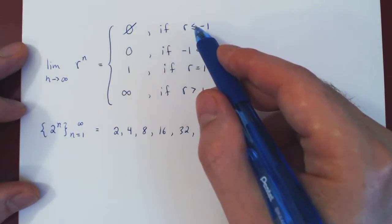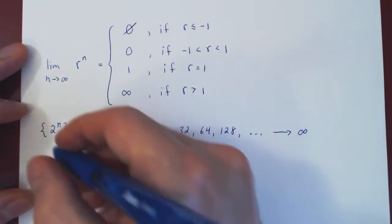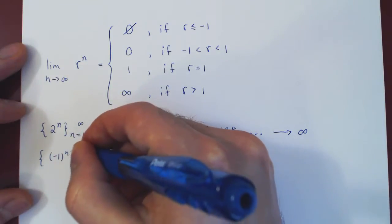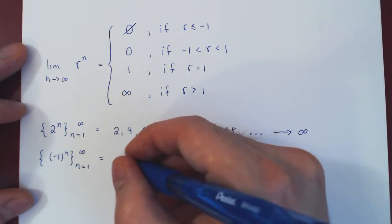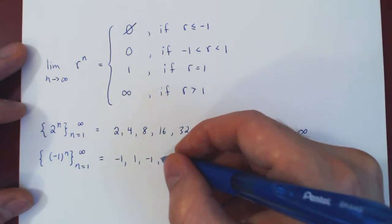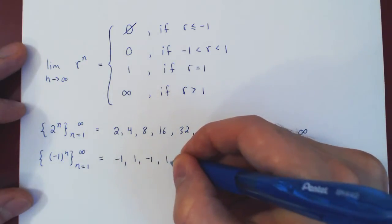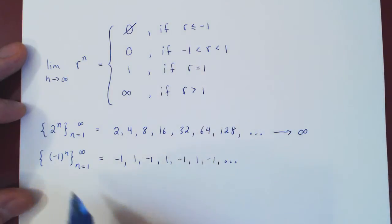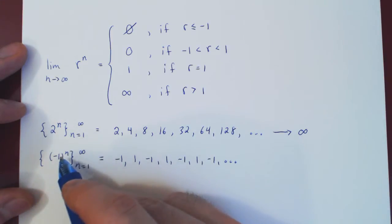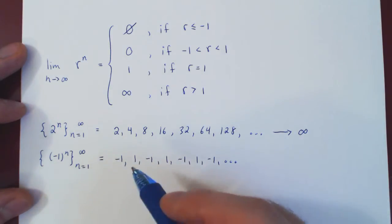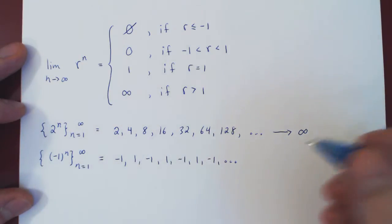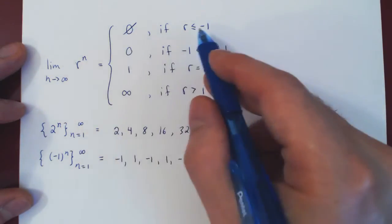When r is less than or equal to negative 1, let's first take r to be negative 1. Negative 1 to the 1 is negative 1. Negative 1 squared is positive 1. Negative 1 cubed is negative 1, and so forth. So you'll have an alternation between negative and positive 1 forever — when n is even, an even power of negative 1 is positive 1; when n is odd, an odd power of negative 1 is negative 1. So the sequence will bounce forever between negative 1 and 1, and so the limit does not exist.